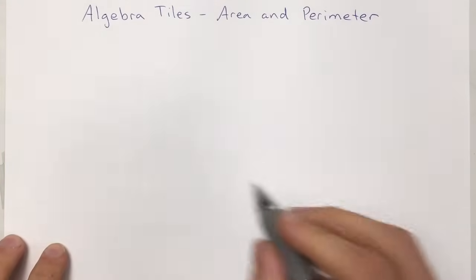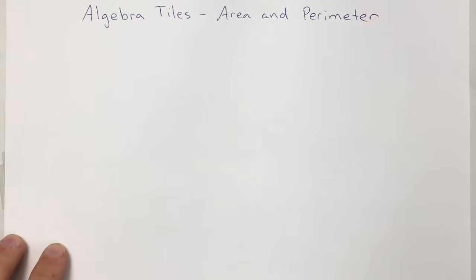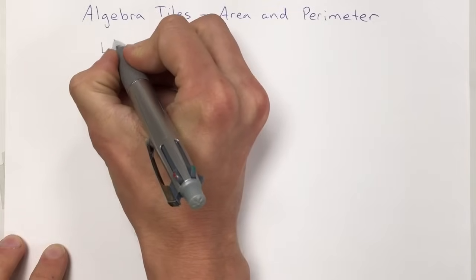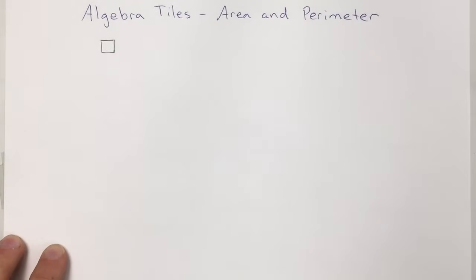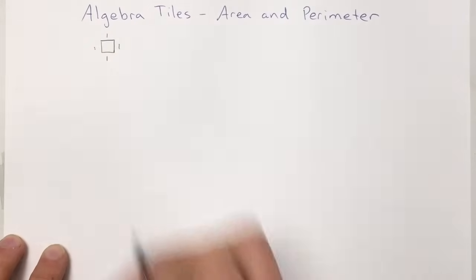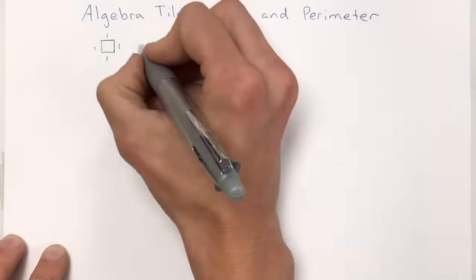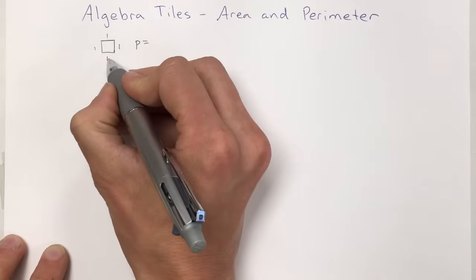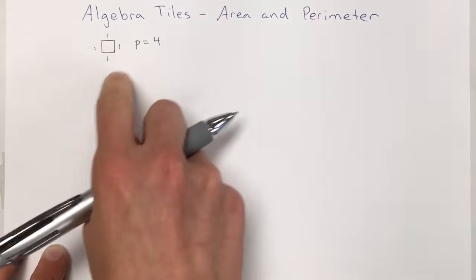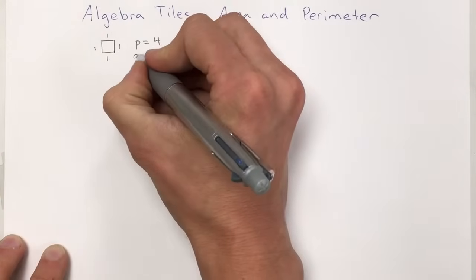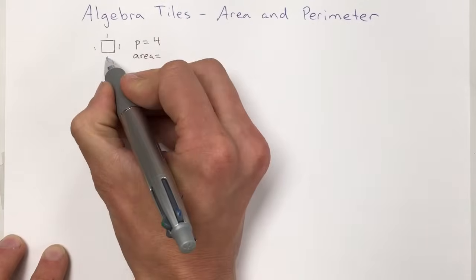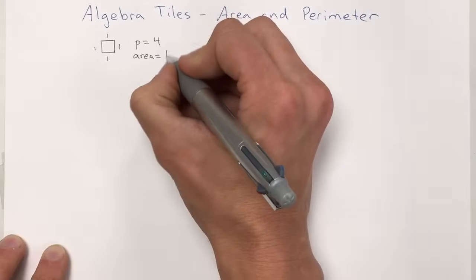The first thing to think about is what the various algebra tiles are. The one you'll commonly see is just a little box, and when you see a little box like this, the value has a perimeter of one on each side. So the perimeter equals one plus one plus one plus one, which is four. Our area is one times one — width times length — so our area is one.